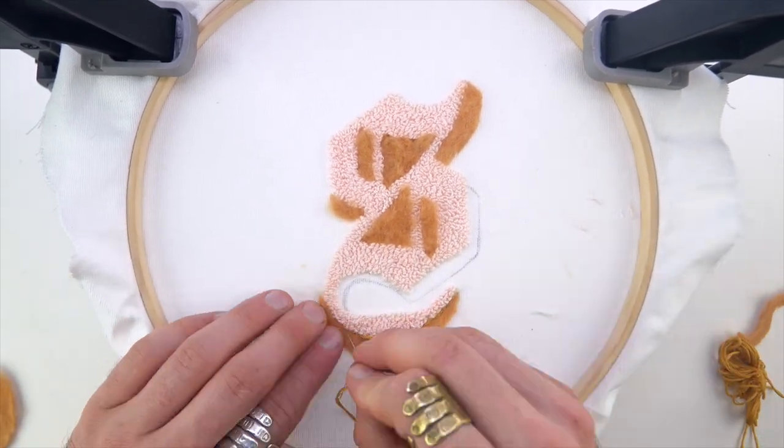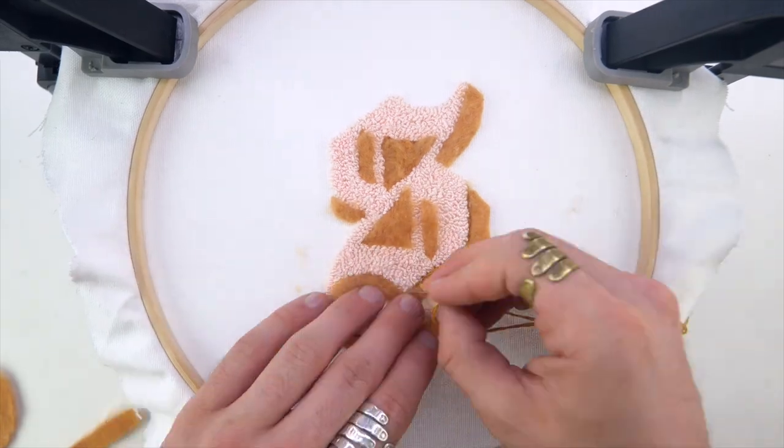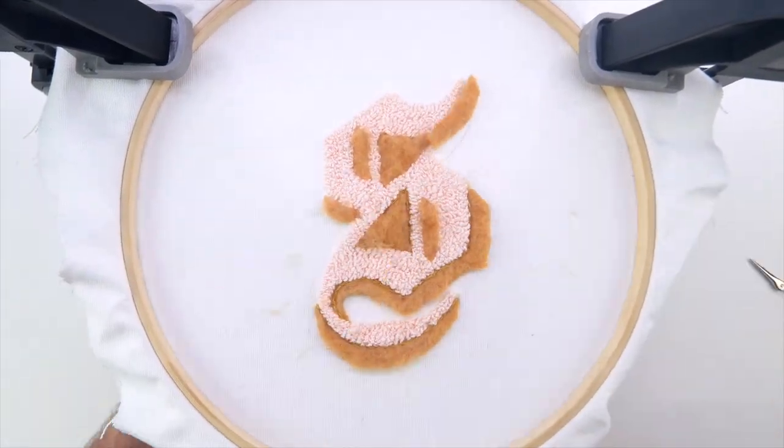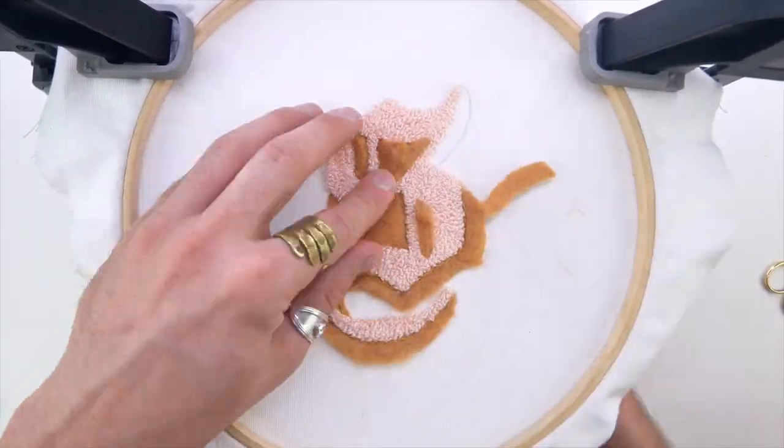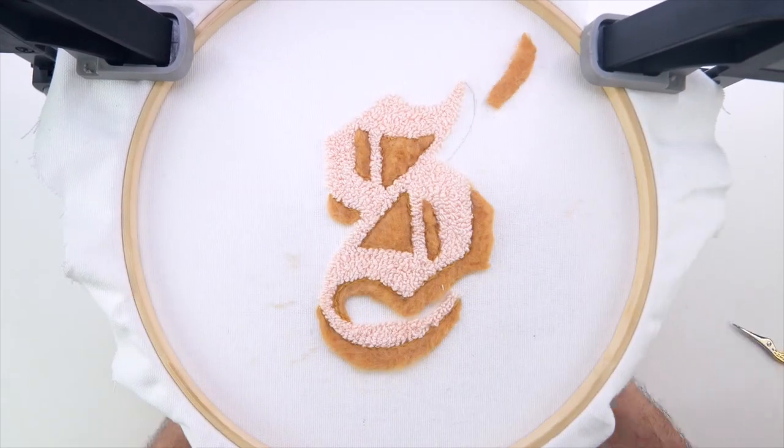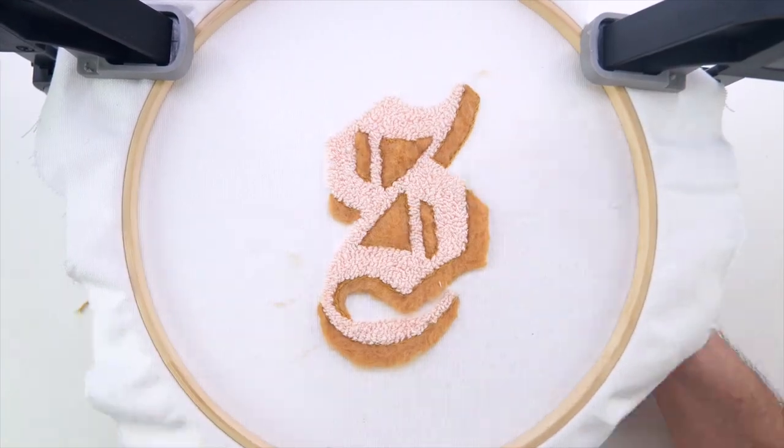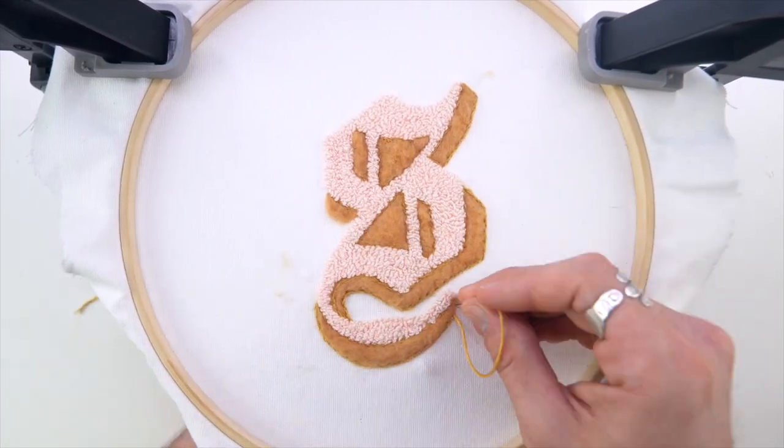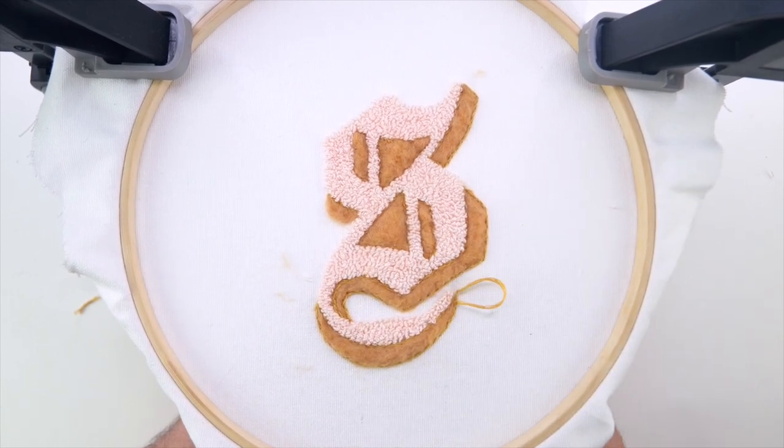But this time I used a gold embroidery floss. I can tell I already liked it a lot more. So I went all the way around making sure they're in place. And then did the outline edges. Because at first I didn't think I was going to do the edges. But I really liked how it looked.